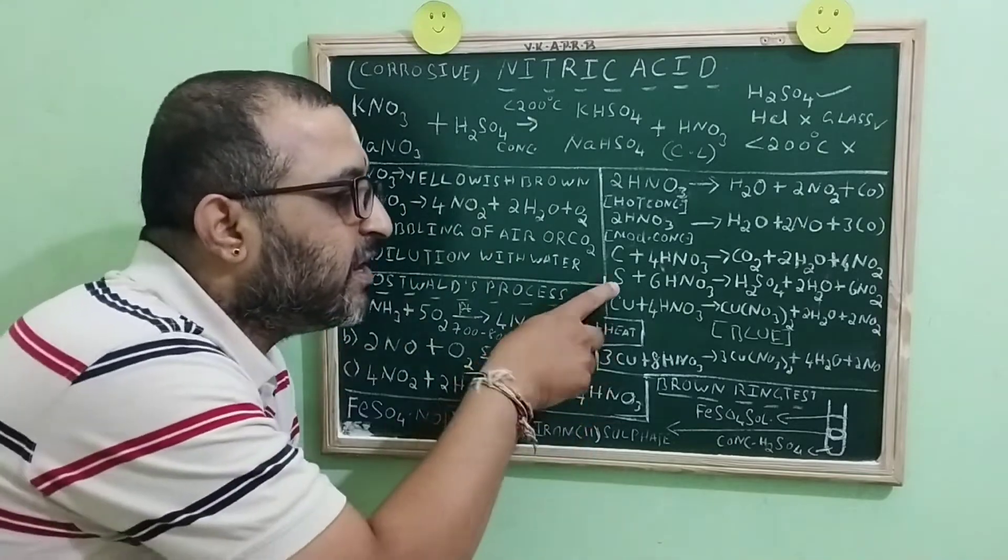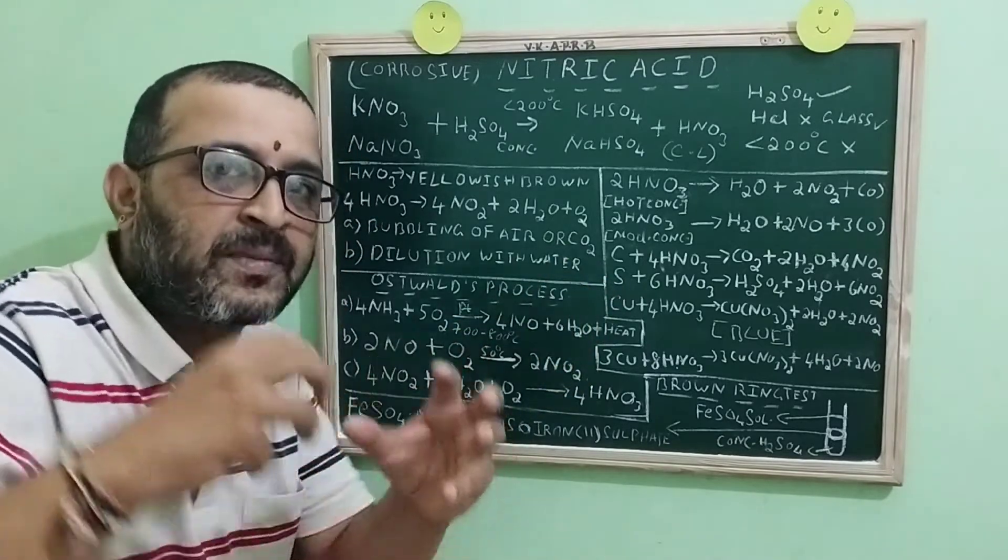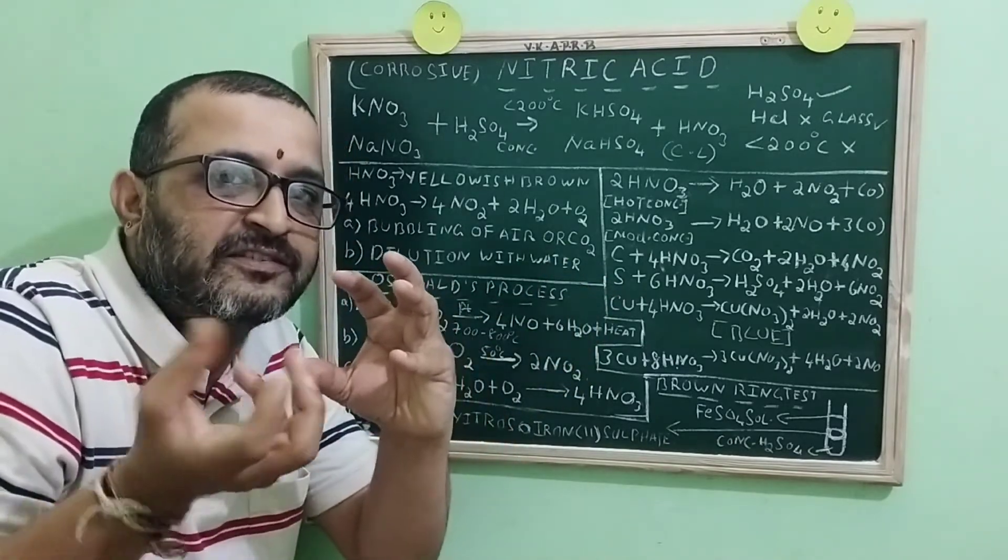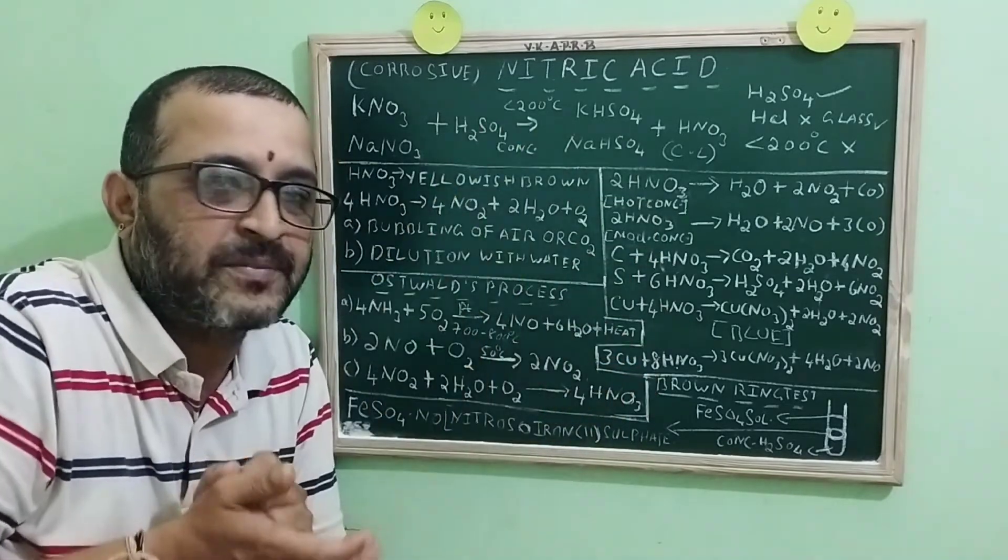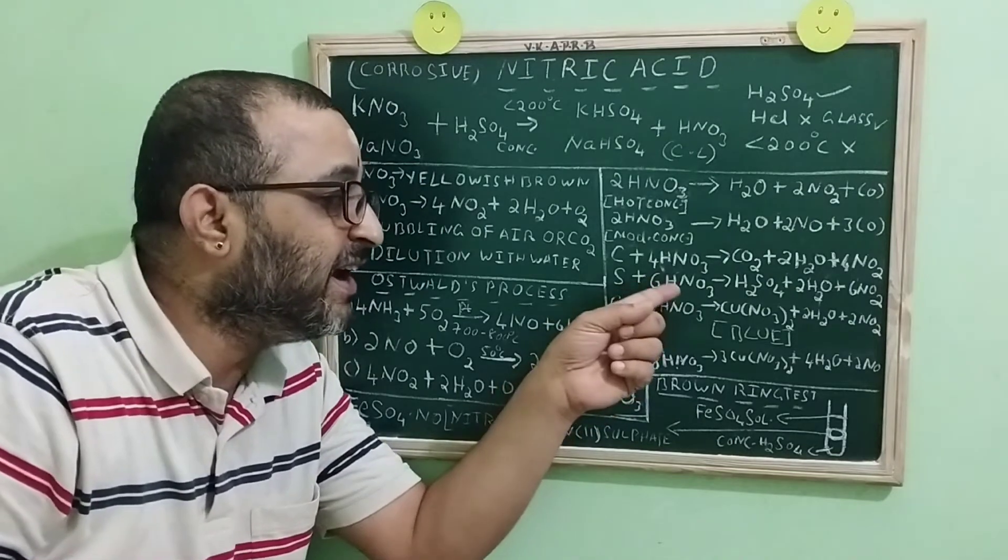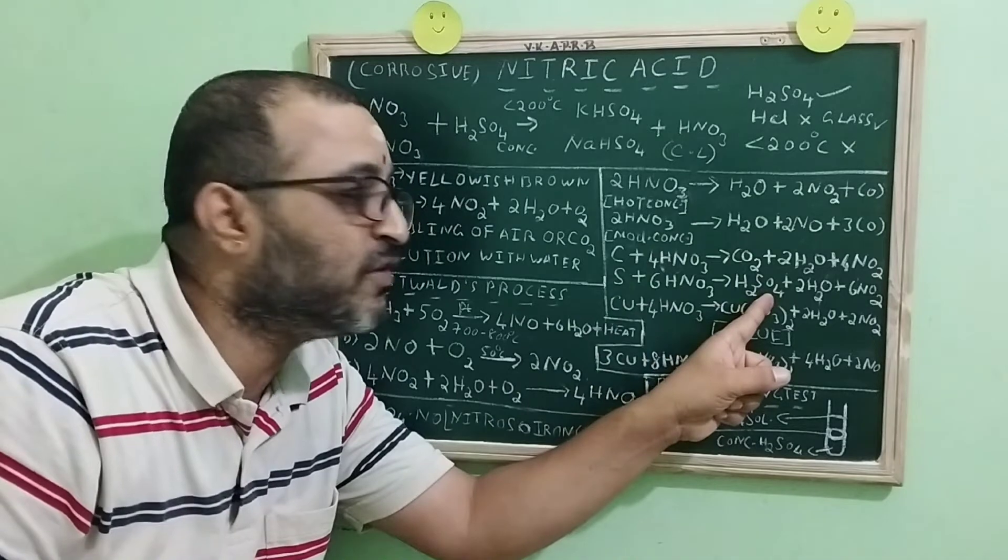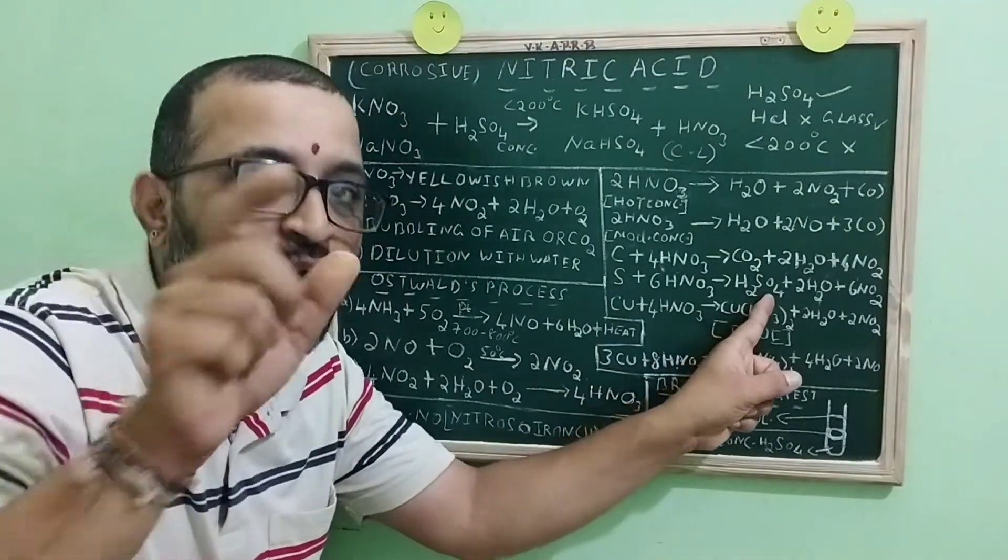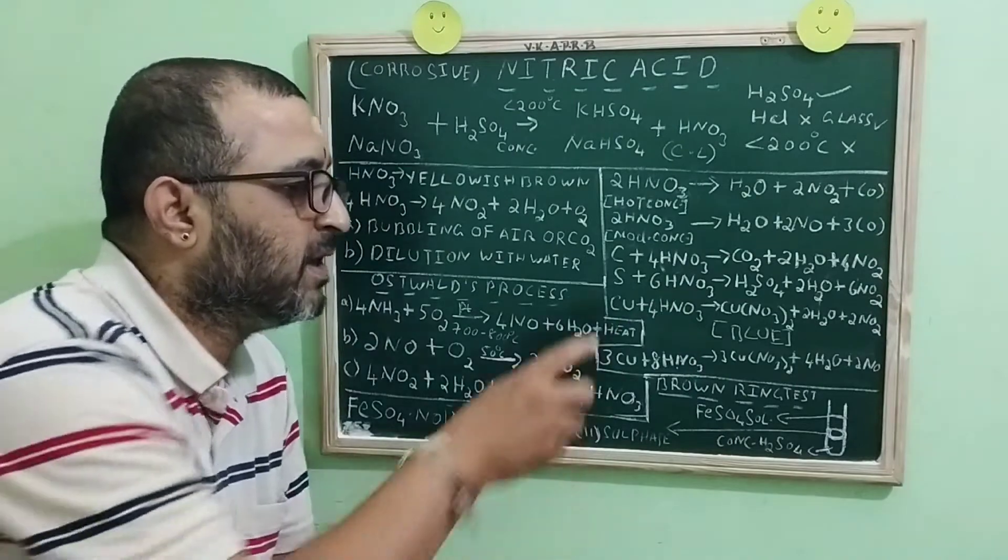There is a beautiful information in the second one. Generally, we say that a non-volatile acid, sulfuric acid, is used to produce volatile acid, HCl and HNO3. The beauty of this reaction is that nitric acid, which is volatile, is producing sulfuric acid that is non-volatile. This reaction is very important for the board exam.